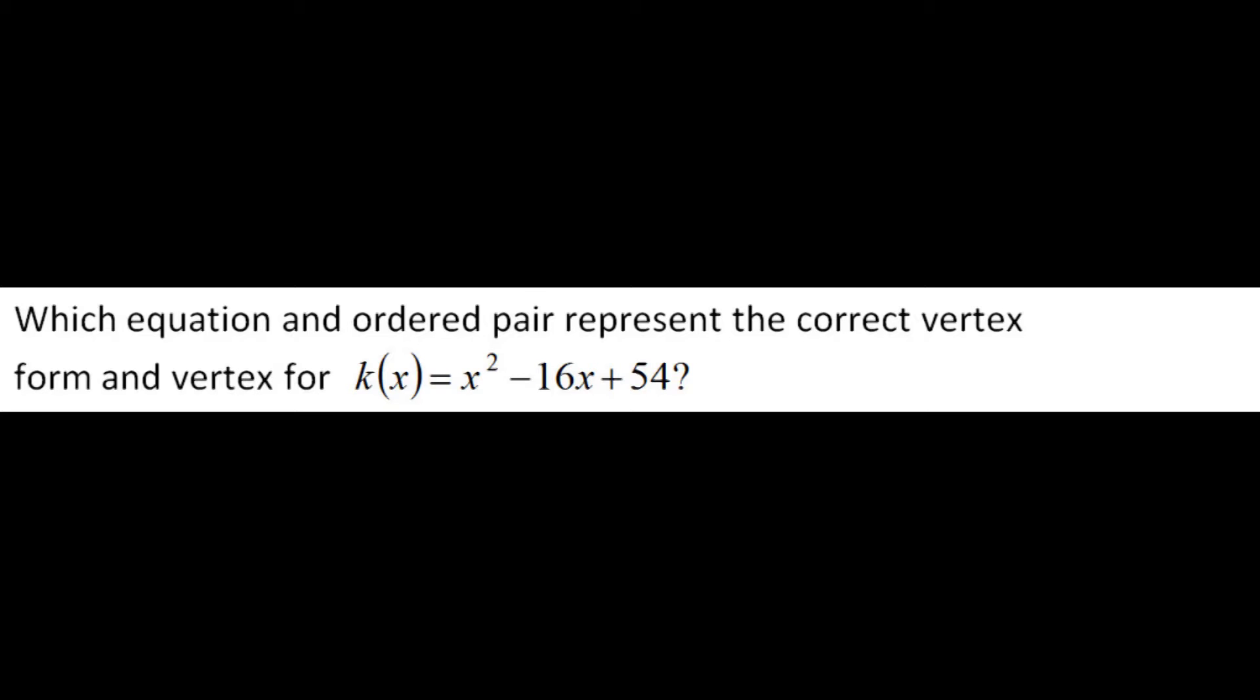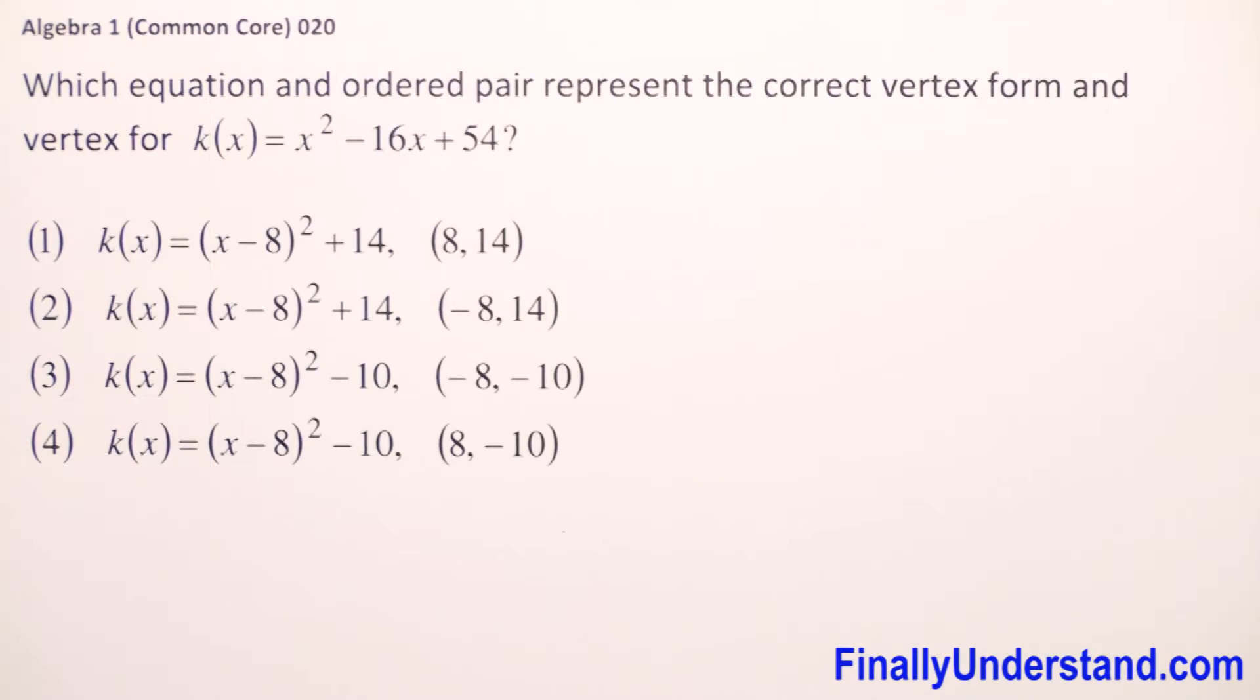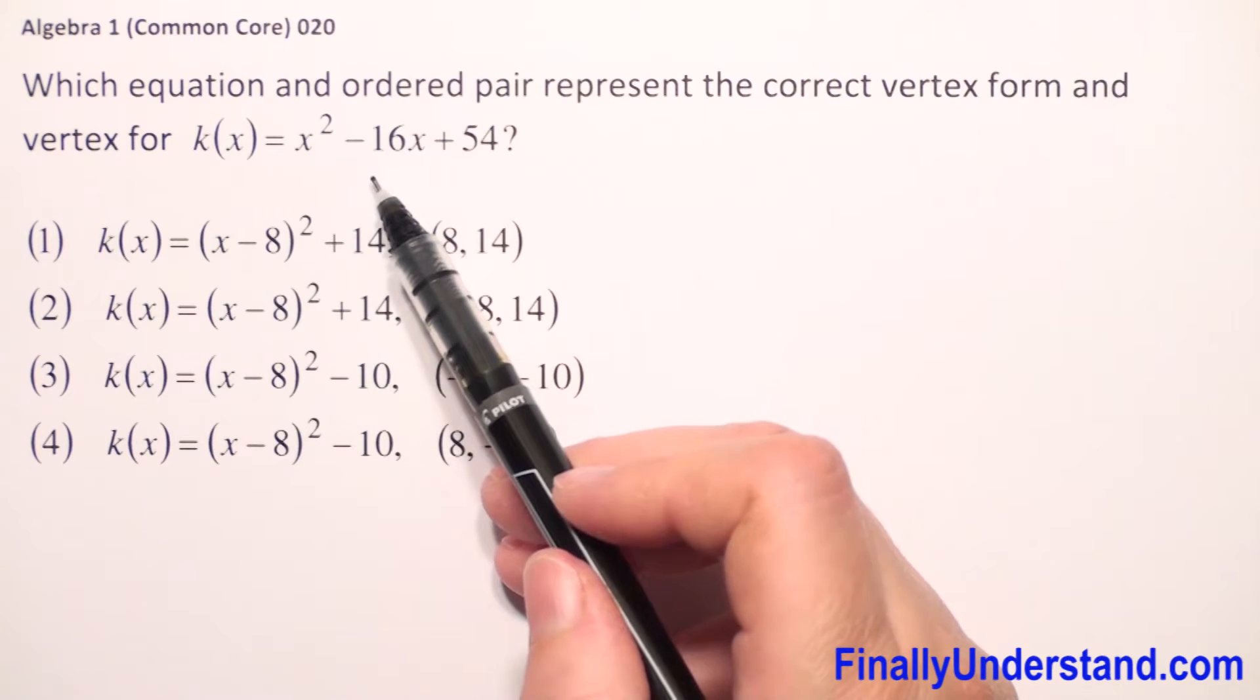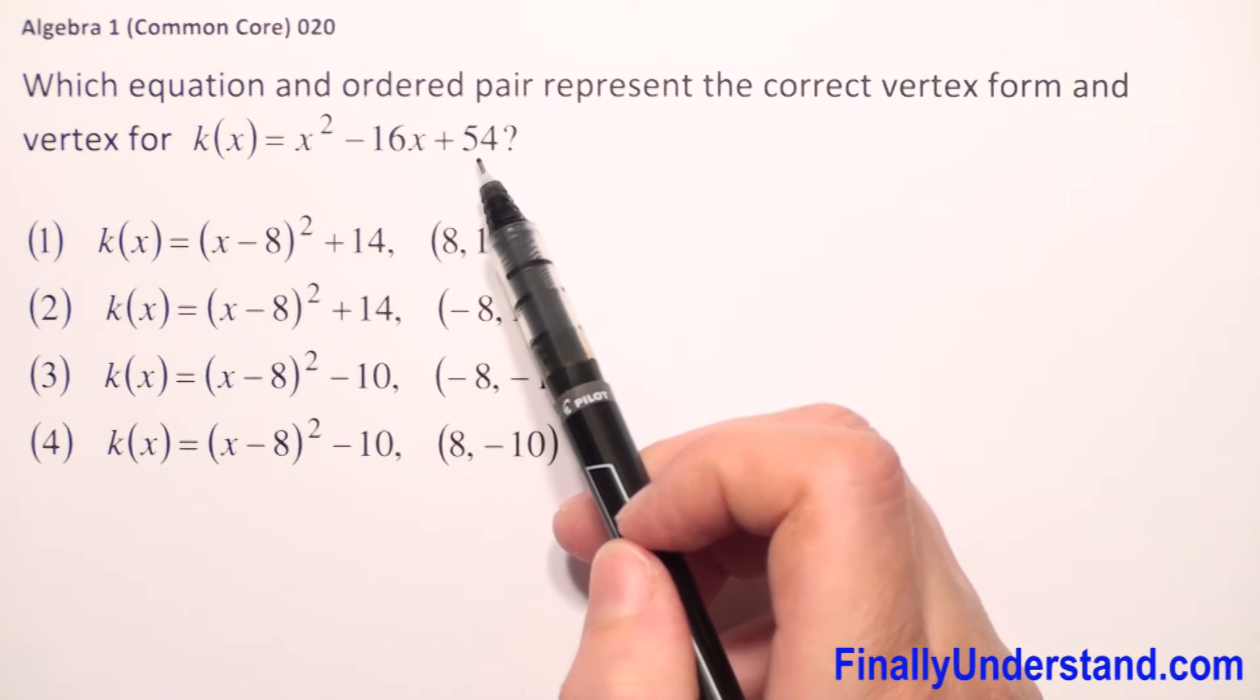Which equation and ordered pair represent the correct vertex form and vertex for k(x) = x² - 16x + 54?